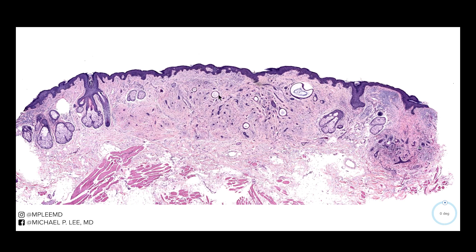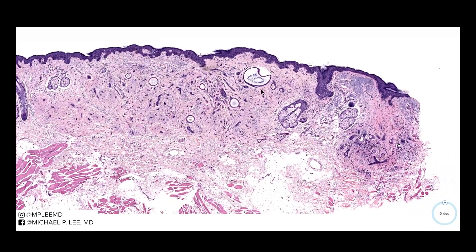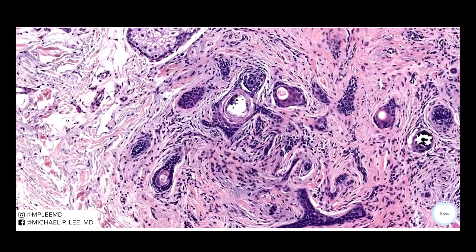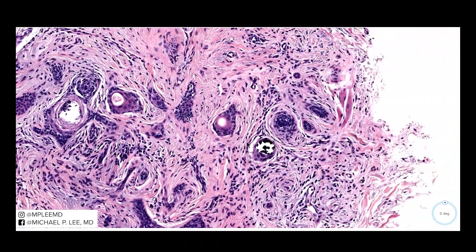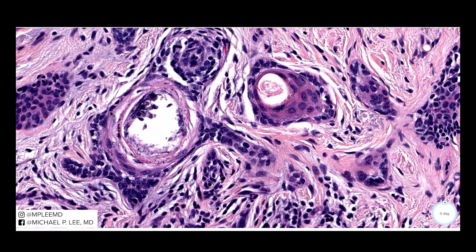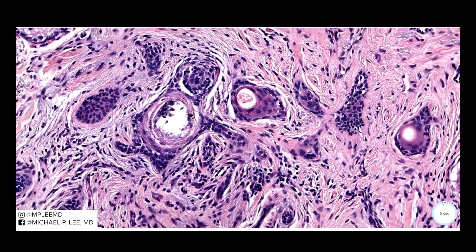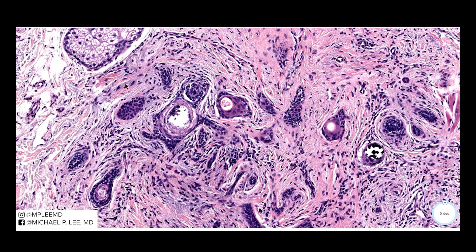We do see numerous horn cysts here with keratinaceous material in there. Anytime you have cysts in the skin, they often rupture — sometimes by trauma, sometimes on their own — and the repair process can occasionally lead to calcifications developing within them. This is a helpful diagnostic clue: basal cell carcinomas are less likely to have calcifications, while desmoplastic trichoepitheliomas will more commonly have calcifications, probably due to the presence of the cysts.